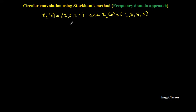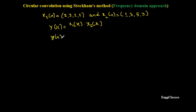What Stuckham's method says is: first get X1(k), which is the DFT of x1(n), and also get X2(k), which is the DFT of x2(n). Then multiply them and call it Y(k), so Y(k) = X1(k) × X2(k). Later find Y(n), which is the IDFT of Y(k). This is the method of Stuckham's frequency domain approach.